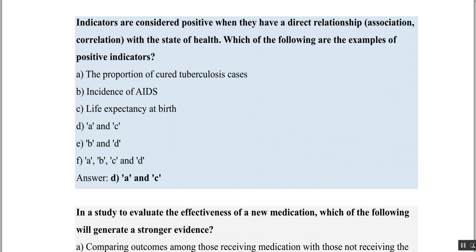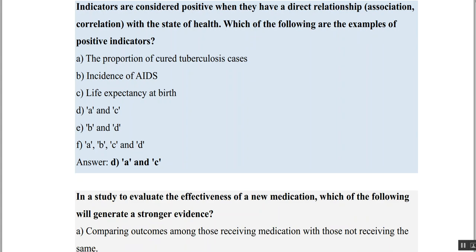Indicators are considered positive when they have a direct relationship or association with the state of health. Examples of positive indicators from the options include proportion of cured TB and life expectancy at birth — so A and C are the positive indicators.